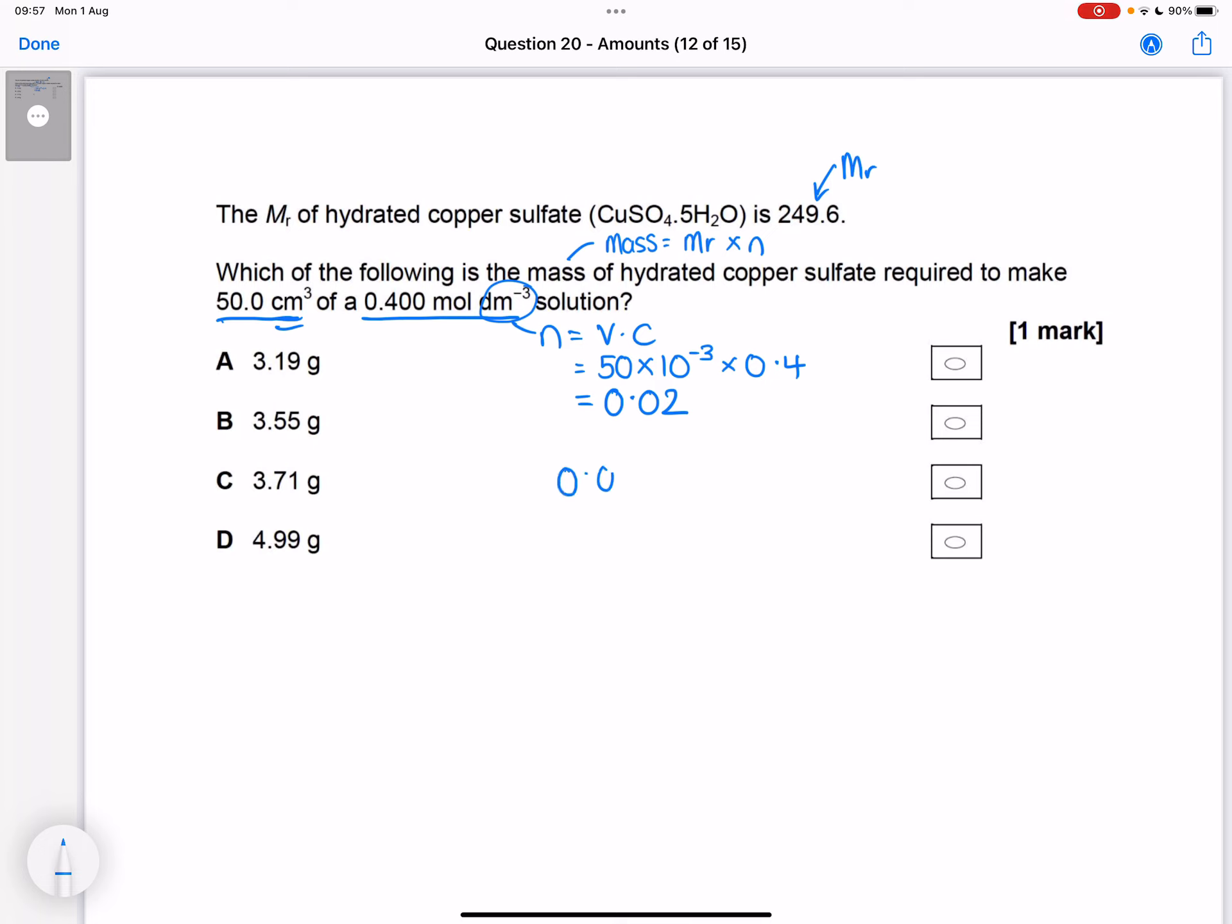So you can take that 0.02 and times it by the 249.6 that they've given you. That's given you 4.992 grams. So we're going to select answer D.